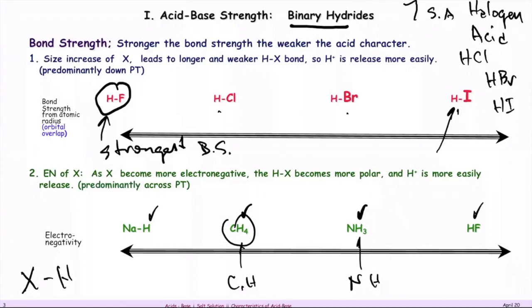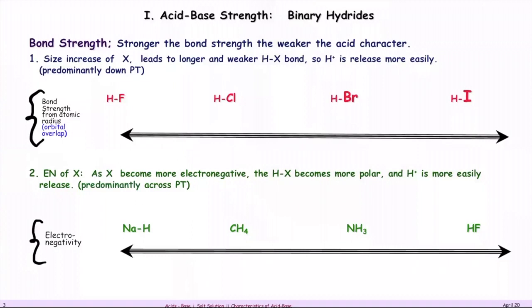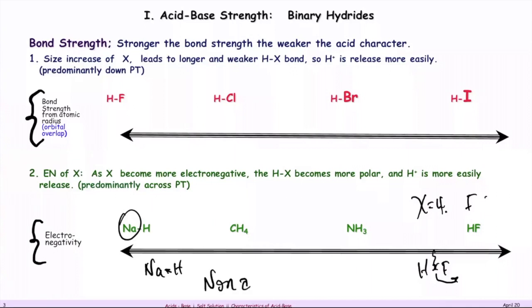We know fluorine is more electronegative than sodium. The higher electronegativity polarizes the electrons shared between hydrogen toward the fluoride, causing that bond to be weaker and making HF an acid. For NaH and CH₄, the electronegativity difference is not large, so the bond is strong — that's why NaH and CH₄ are non-acids.